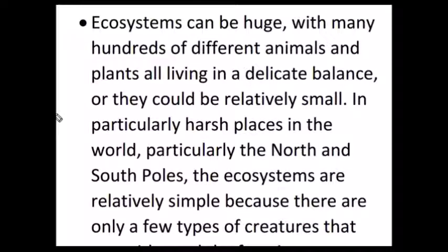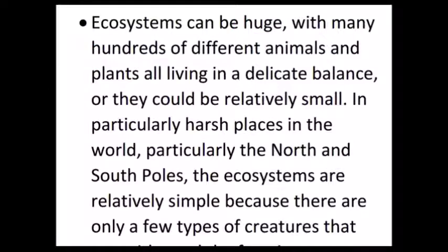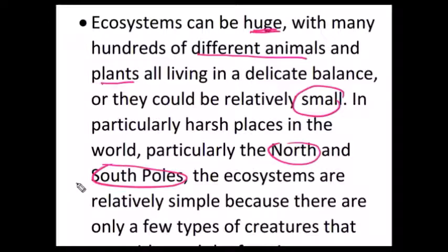You may ask another question: what about the size of ecosystems? Ecosystem sizes are not uniform — they can be huge and they can be small as well. They can be huge, where plenty of animals and plants live in a delicate balance. Examples for small ecosystems are the north and south poles, where only few creatures can survive the harsh cold climate.